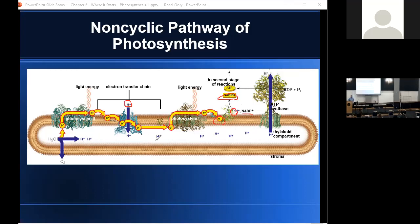The whole time, we've been building up a concentration gradient inside the thylakoid compartment. Protons can't diffuse across the phospholipid bilayer, so they need to go through a pore-forming channel. ATP synthase has that pore-forming channel. As protons diffuse down their concentration gradient out of the thylakoid compartment into the stroma, the energy from this drives the formation of ATP from ADP and inorganic phosphate. ATP is the energy currency of the cell and will provide energy for the light-independent reactions.